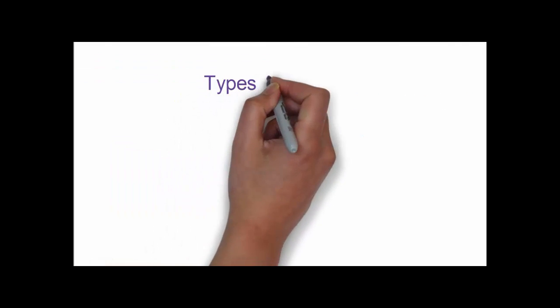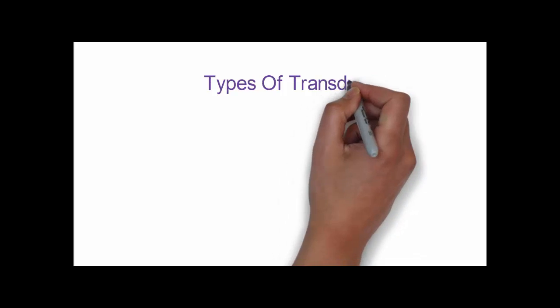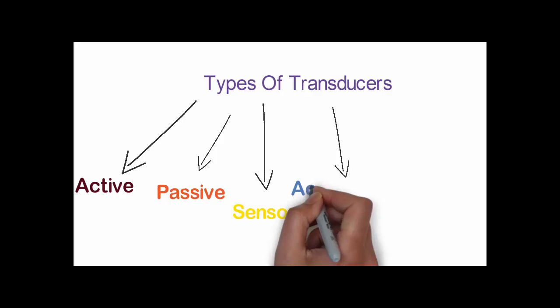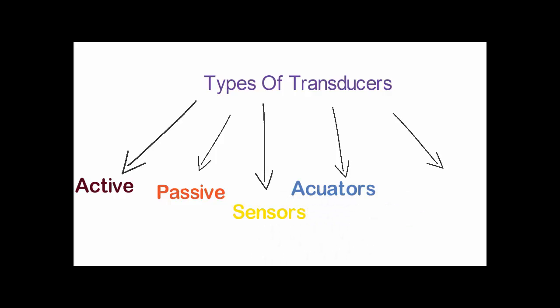Now we come to the types of transducers. They can be simply divided into five types: active transducers, passive transducers, sensors, actuators, and bidirectional transducers. The whole of electronics revolves around these five transducers, and the need for transducers can be seen in various places like shopping malls, theatres, etc. Let's get to know each of them in detail.